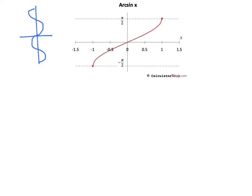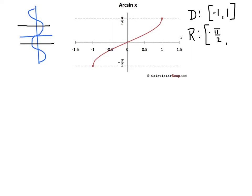You'll notice it definitely does not pass the vertical line test. So we had to put some restrictions on it — we said we're not going to let it go any higher than π/2, and not any lower than negative π/2. As long as we stay within that window, we've got ourselves a function. So the domain of arcsine is from negative 1 to 1, and the range is from negative π/2 up to positive π/2.